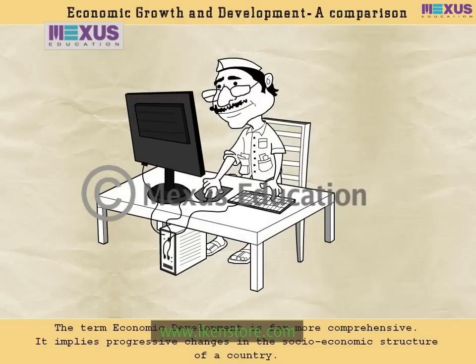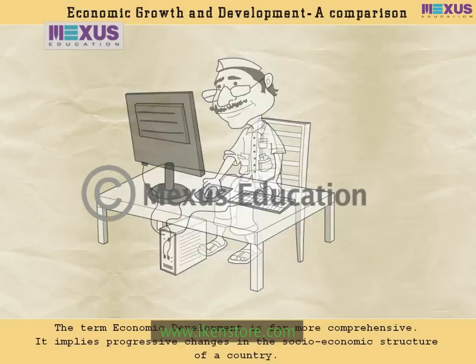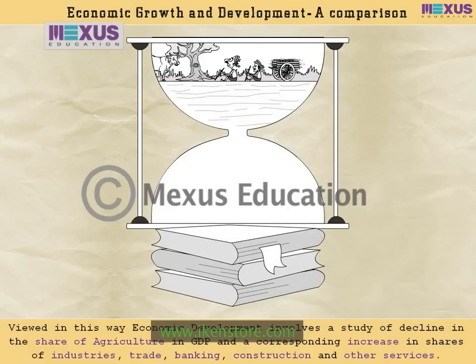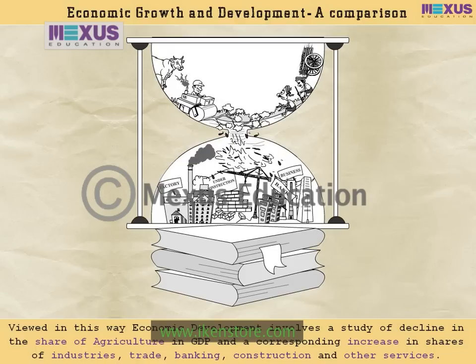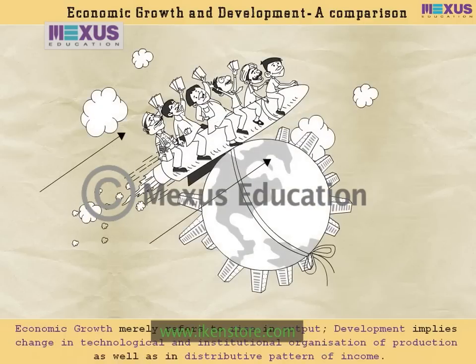The term economic development is far more comprehensive. It implies progressive changes in the socio-economic structure of a country. Economic development involves a study of decline in the share of agriculture in GDP and a corresponding increase in shares of industries, trade, banking, construction, and other services. Whereas economic growth merely refers to a rise in output, development implies change in technological and institutional organization of production as well as in the distributed pattern of income.